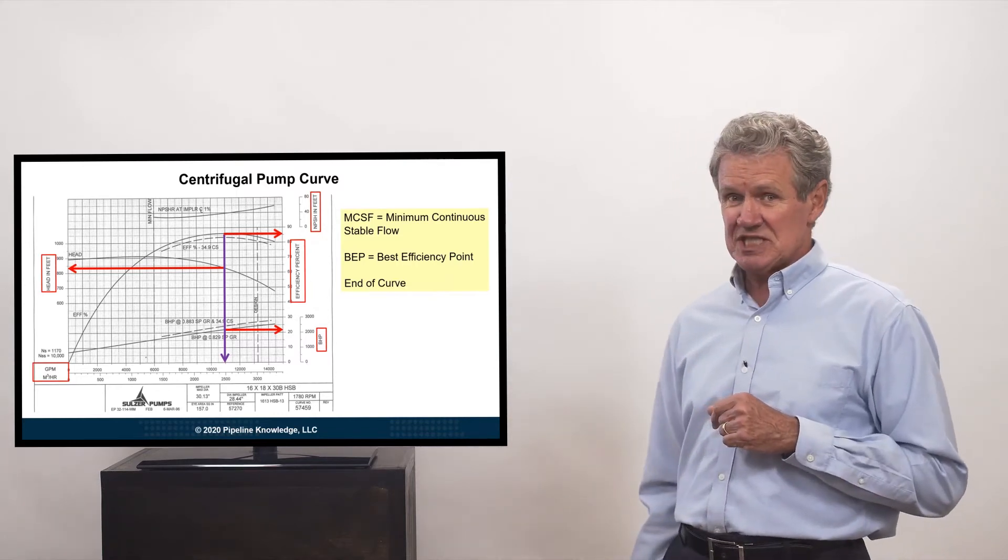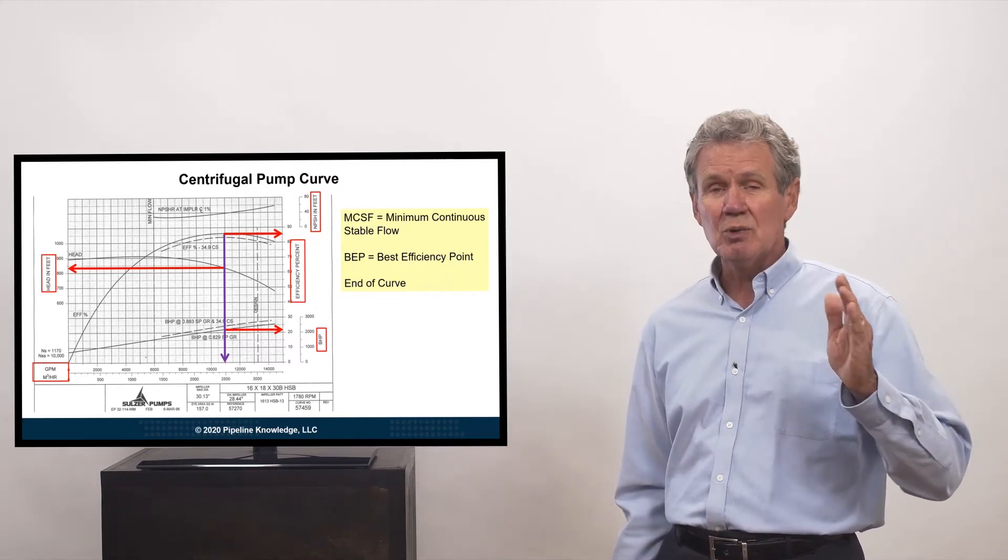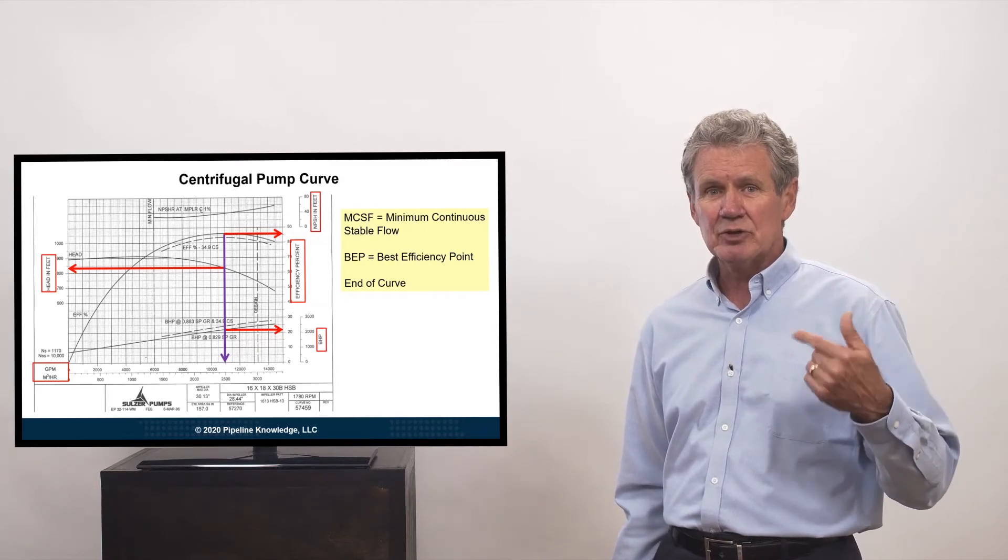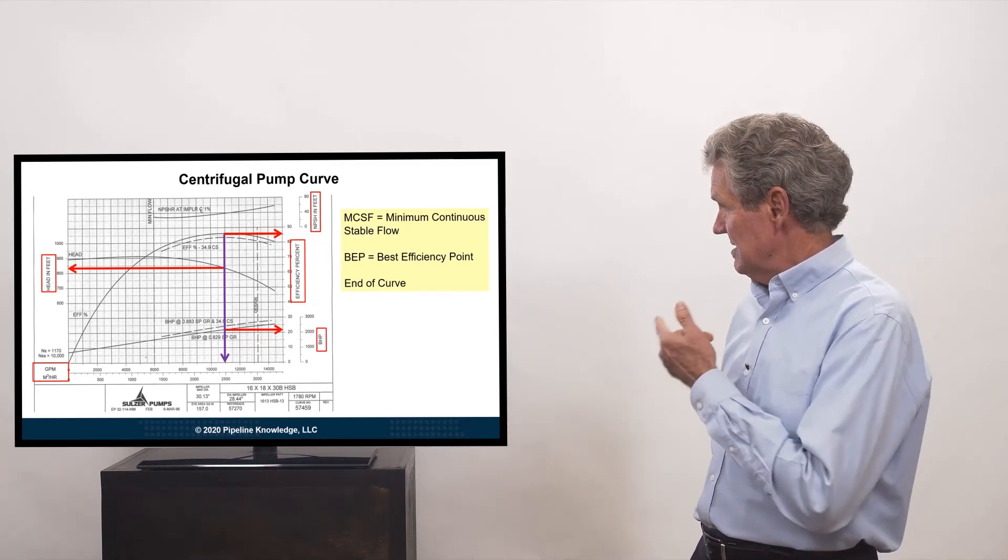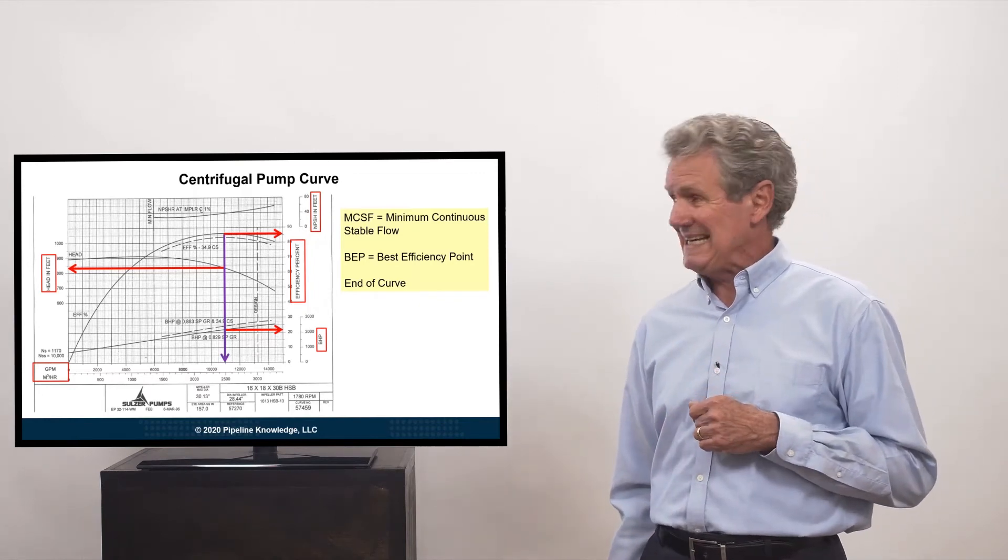I'm going to show you a couple more things. The minimum continuous stable flow. If we go too low in flow, the flow pattern through the pump gets messed up and is not effective. The best efficiency point and the end of the curve.